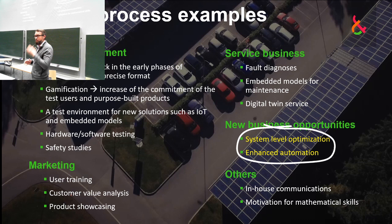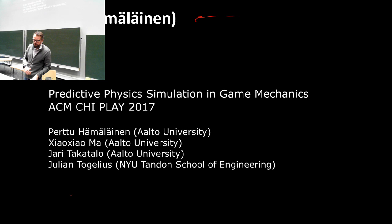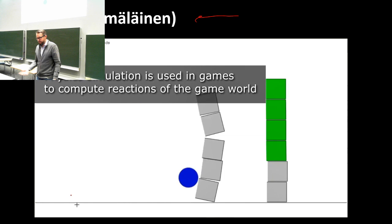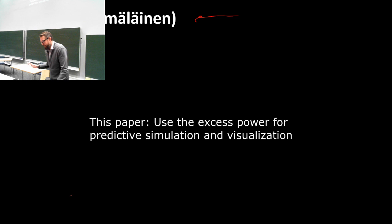Someone mentioned that Terminator isn't the real deal — in the original movie, machine awareness was supposed to take place around 2010, which is already history, so that never happened. Anyway, that's predictive simulation and faster-than-real-time computing. First, this is like an Angry Birds game: you shoot and see what happens. But if you compute much faster than real time, you see the consequences immediately.